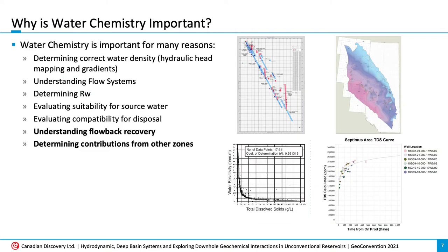So why is water chemistry important? Water chemistry is important for many reasons, including determining correct water density for hydraulic head mapping and pressure gradients, and in turn understanding flow systems, which is obviously a big component of any hydrogeology and hydrodynamic study. It's also important for determining RW, evaluating suitability for potential source water, and evaluating compatibility for potential disposal wells. The next two reasons are the focus of this presentation, which is using water chemistry and isotopic analysis to understand flowback recovery and to determine the contribution from other zones within the Montney Formation.